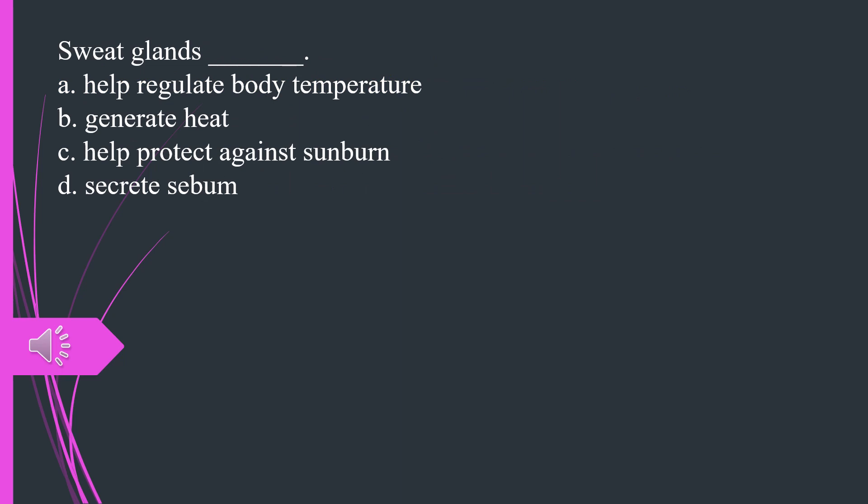Sweat glands A. Help regulate body temperature B. Generate heat C. Help protect against sunburn D. Secrete sebum. The answer is A, help regulate body temperature.